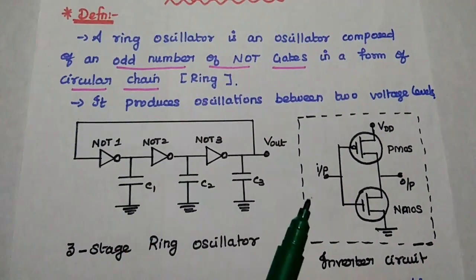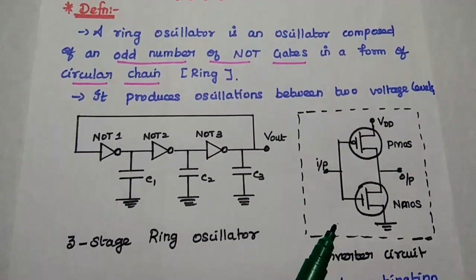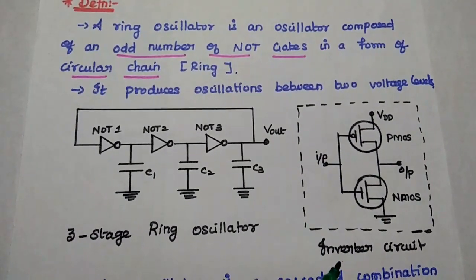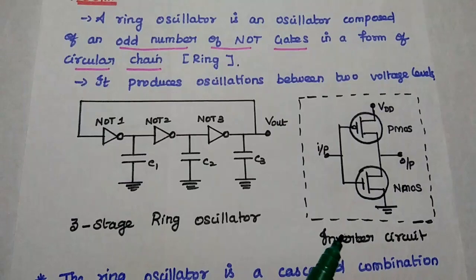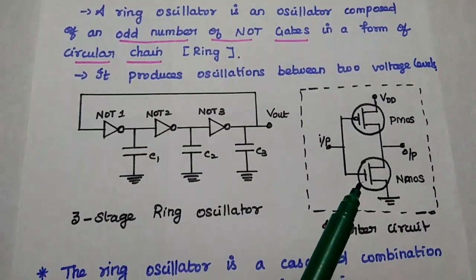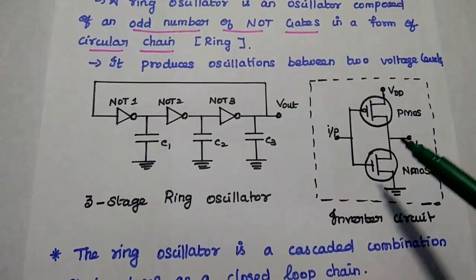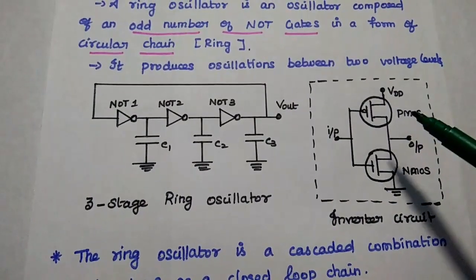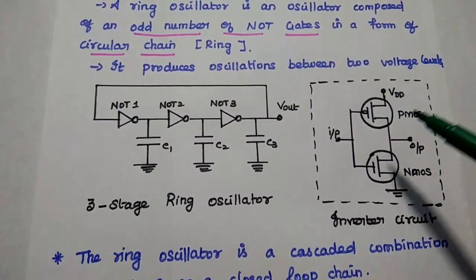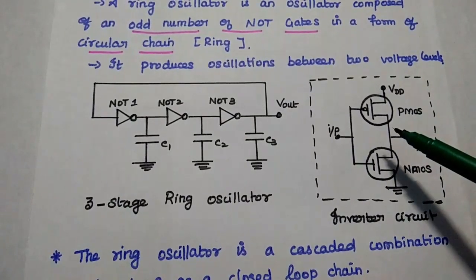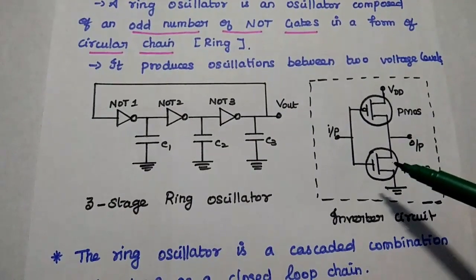Here each inverter is represented with the CMOS technology. This is the inverter circuit which uses the CMOS technology. Here it requires only the power to operate the system and oscillations begin spontaneously between two threshold voltage levels.